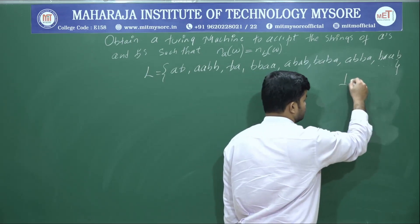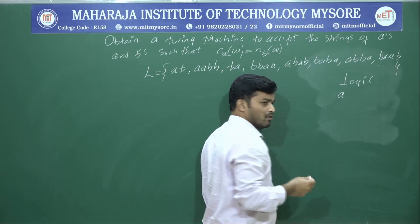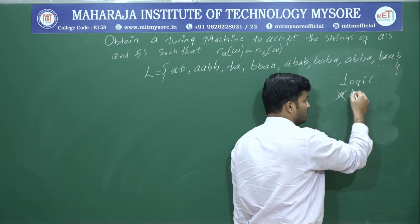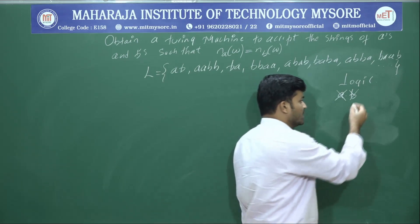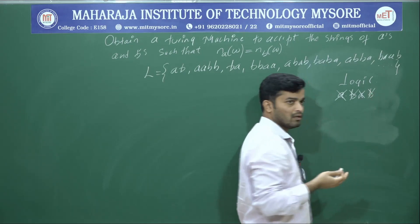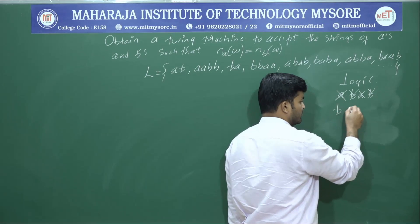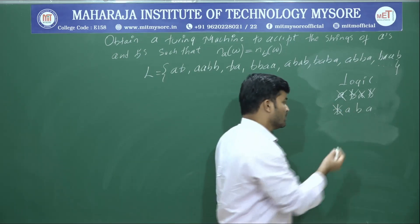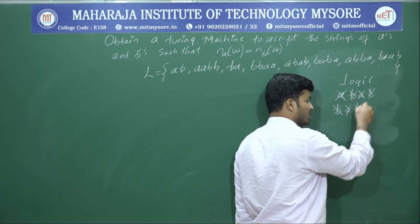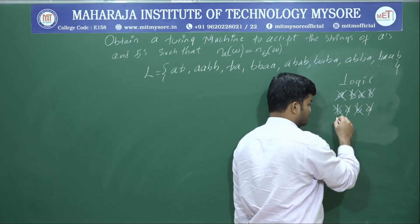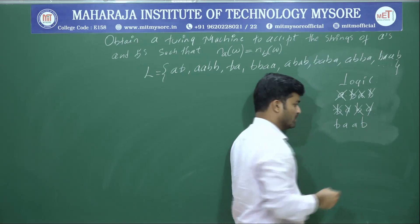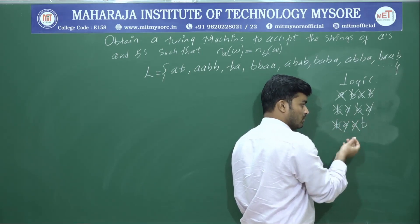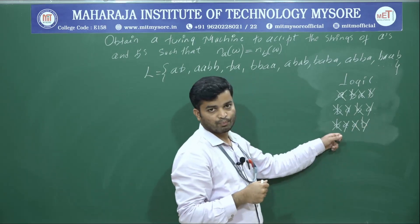First we will see the logic. Whenever I get A, I will replace it with a special symbol — assume that is X. And whenever I get B, I will replace it with Y. Again if I get one more A, replace it with X, and if I get B, replace it with Y. The string may also start from B — in that case, replace the first symbol with X, then the alternative symbol B with Y. This is the logic we are supposed to use.